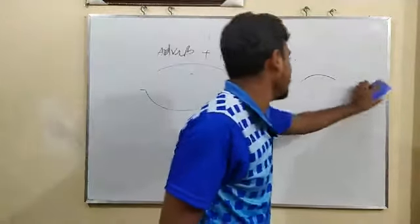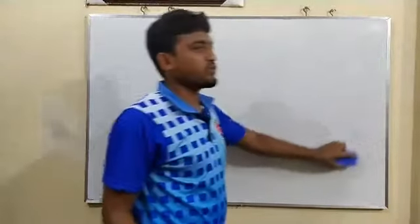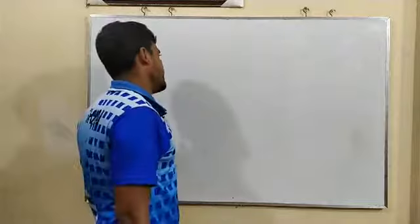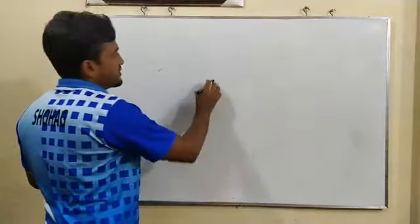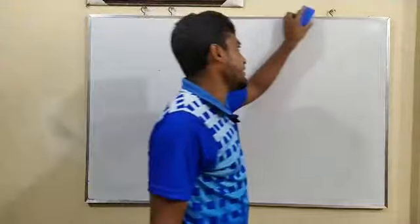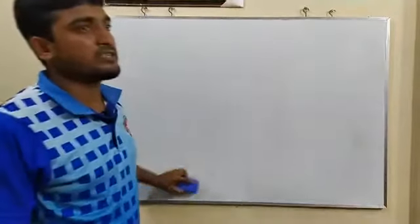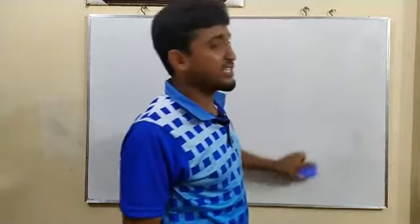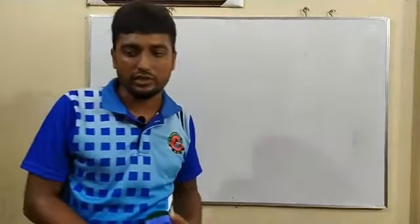We have completed the rules of two parts of speech — first, the rules of noun, and second, adjective. In my next class, I will complete another two rules of parts of speech. After completing all the rules, we will do a lot of practice, especially with fill-in-the-blanks with and without options. Try to be well. As-salamu alaykum wa rahmatullahi wa barakatuh.